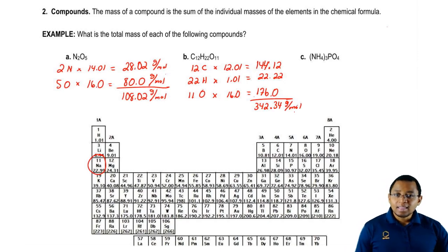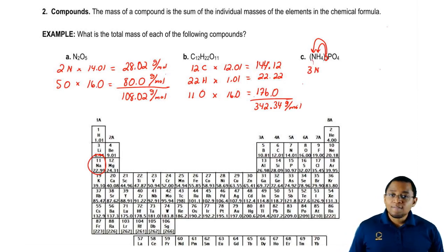Finally, the last one. We have NH4 inside of brackets and there's a three out here. That three gets distributed to everything inside of the brackets, so it gets distributed to the nitrogen and the hydrogen. We have three nitrogens here and four times three gives us 12 hydrogens. That three only gets distributed to what's inside the brackets. It doesn't get distributed to the PO4 portion. So here we only have one phosphorus and four oxygens.